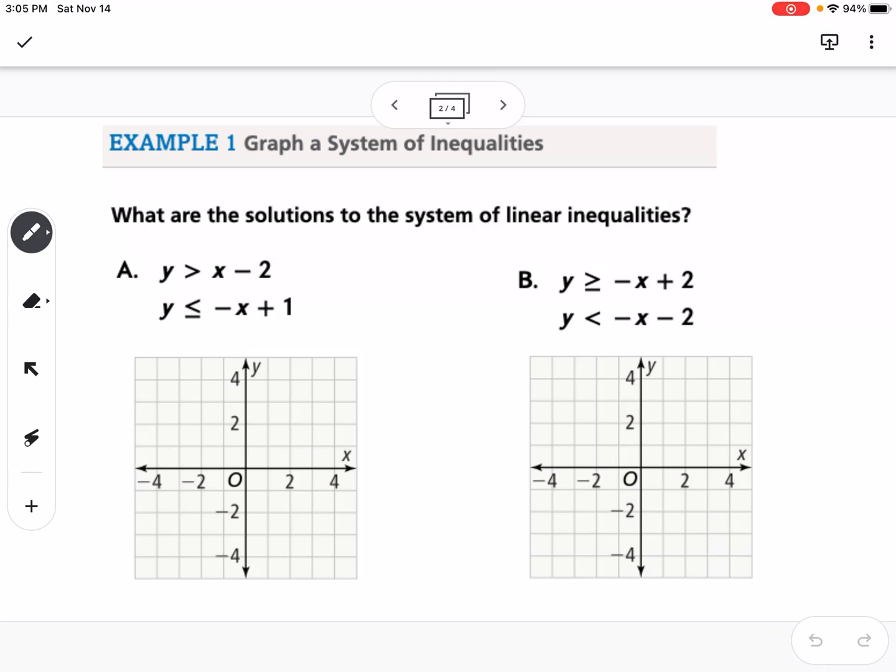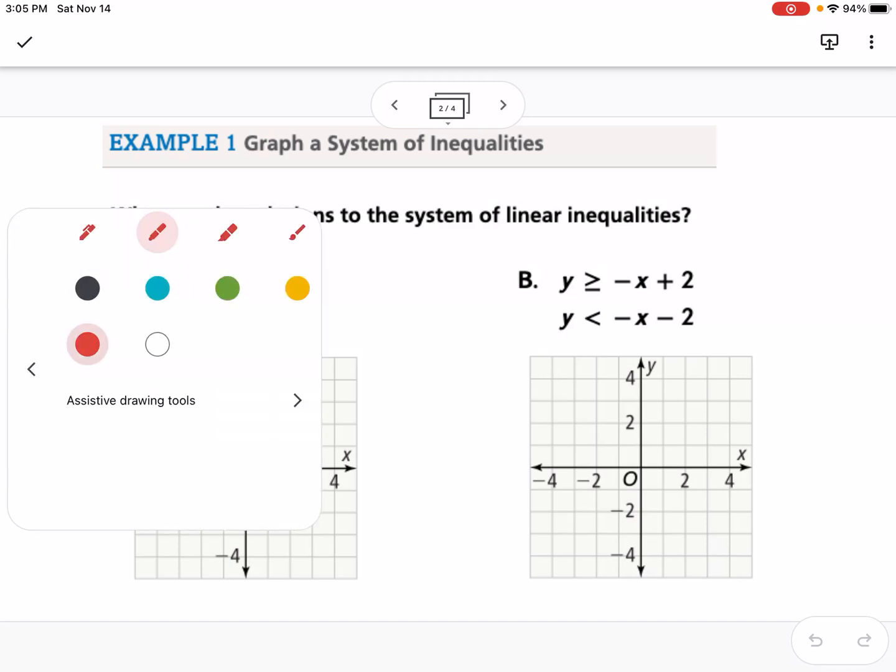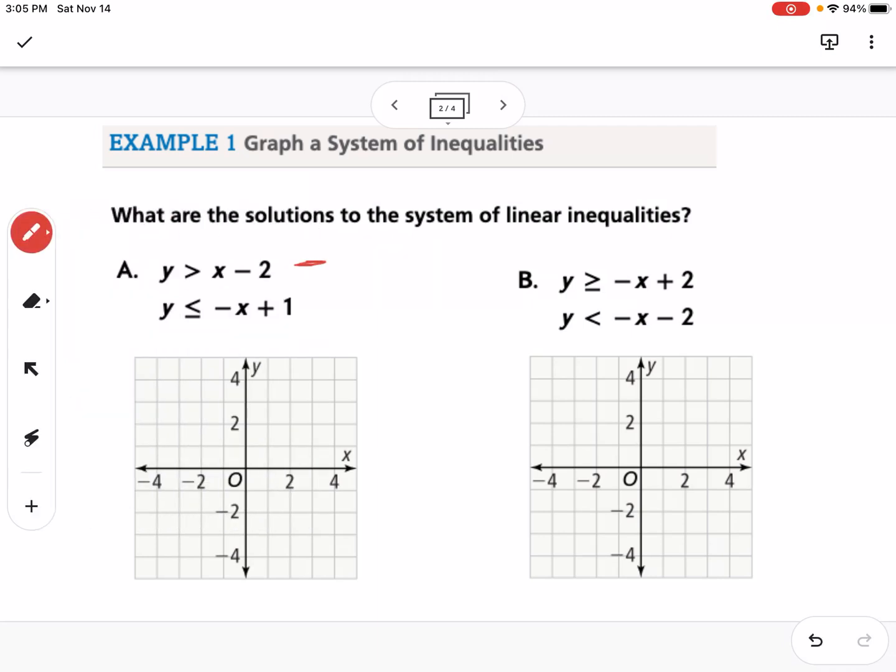Starting with A, I'm going to color code these, so let's make this top one red. I'll find the y-intercept, which is negative 2, and then my slope. Remember, if there's no number with the x, it's just a 1, so it's positive 1. I'm going to go up 1 over 1, up 1 over 1. This one is just greater than, so I'm not going to do a solid line, I'm going to do a dashed line when I connect the dots here.